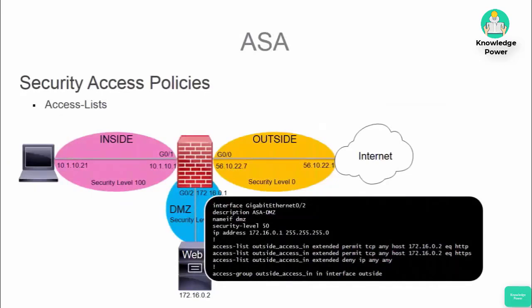No firewall would be complete without access lists. ASA access lists are typically inbound on the outside zone interface, mainly to override the security level default drop actions to permit traffic to public facing services within a DMZ. Best practice with firewall ACLs is to only allow what is necessary. For example, if you had a web server in a DMZ that needs to be accessed from the internet, you would only allow web ports like HTTP and HTTPS in the access list.